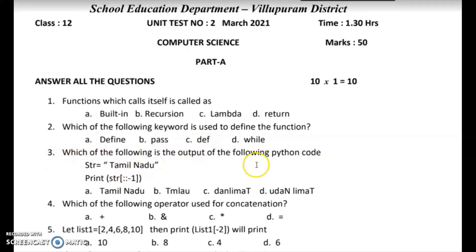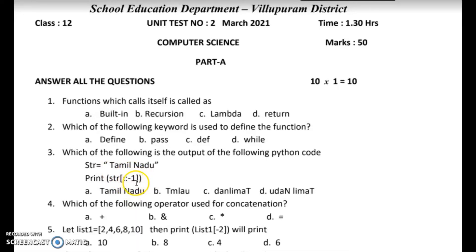Third question: which of the following is the output of the following Python code? In the code, a string variable STR is declared. It is a string variable, so you use double quotes. You can use a string like 'Tamil Nadu'. Then print of STR using the slicing operator — in square brackets, with a starting index, ending index, and stride as the third option. Here the stride is minus 1.